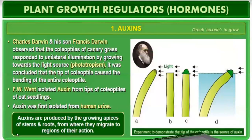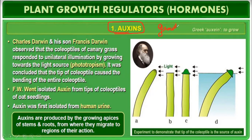Next is auxin — the very first hormone we are discussing. First of all, you have to identify that auxin is a growth promoter. The word auxin comes from the Greek word meaning 'to grow', which tells us it acts as a growth promoter.